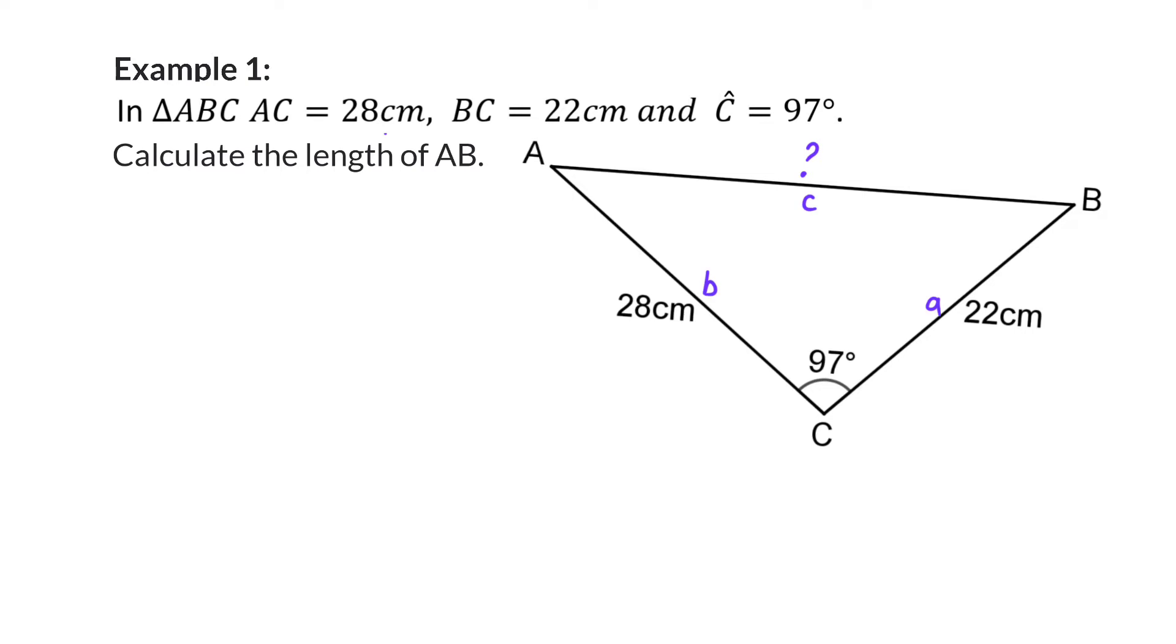From the information, we've received two sides, as well as the included angle. So, even though we have a pair that we can work with, we cannot use the sine rule, because we don't have a second complete pair that we can use. This means we will be using the cos rule, because we have two sides and the included angle.